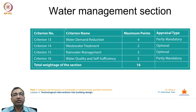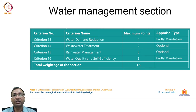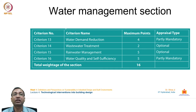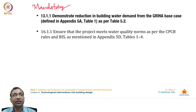The water management section has four criteria: water demand reduction (4 points), wastewater treatment (2 points), rainwater management (5 points), and water quality and self-sufficiency (5 points) — totalling 16 points.